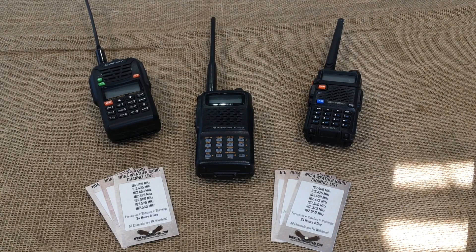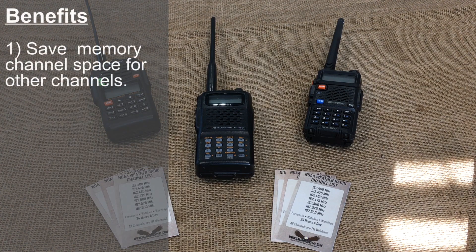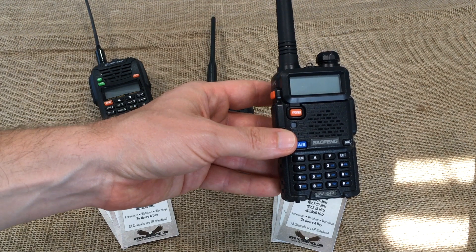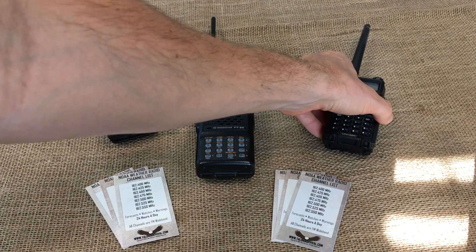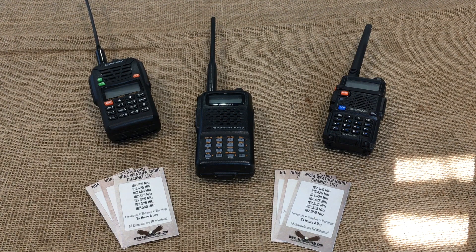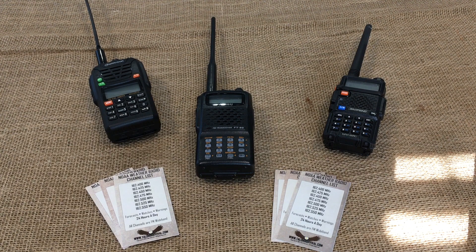We're going to focus on how to tune these radio channels in rather than how to program them into memory. Certain radios, especially older models, have a limited number of channel spaces available. For example, some Chinese radios also have limited channel capabilities — the very popular Baofeng UV5R only has 128 channels available. If you're trying to program a lot of repeaters, simplex frequencies, and things like that, seven frequencies used for a receive-only channel can be utilized in other capable areas when you can just tune this in from the frequency mode.